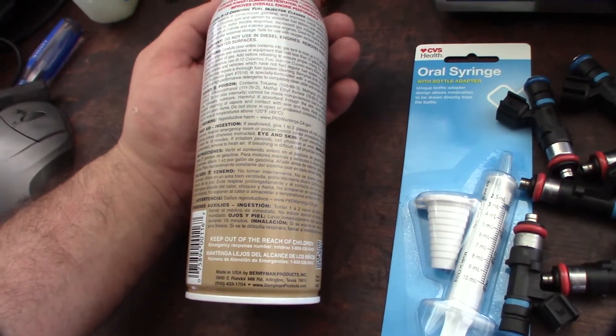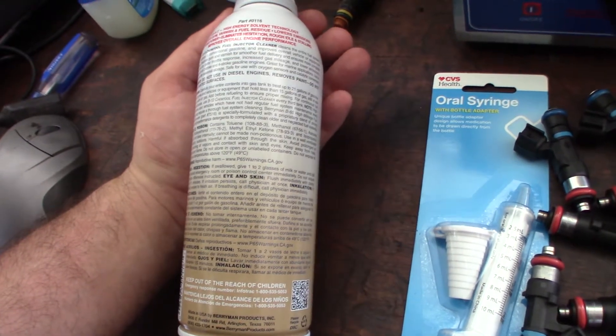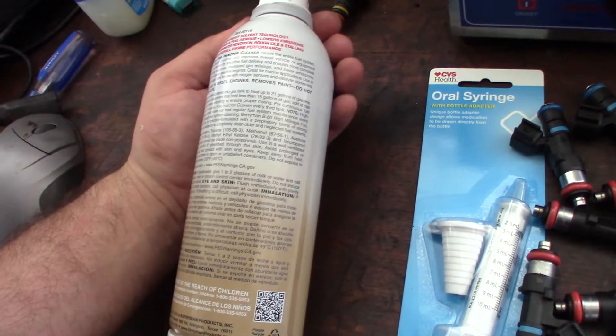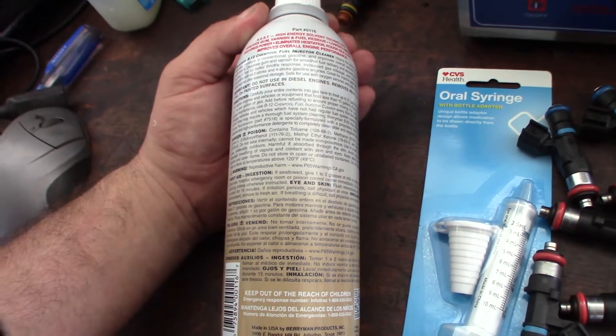I'm assuming if it's designed to be in a fuel system, it's going to be probably rubber safe and plastic safe because some fuel tanks are plastic. But I will read the label.